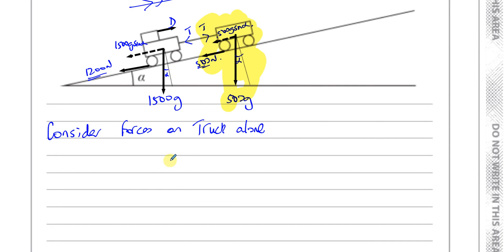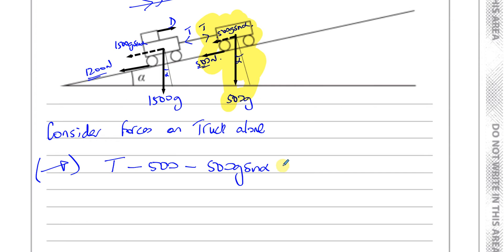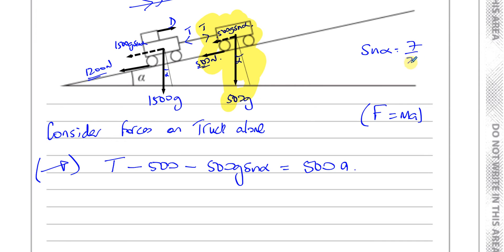Taking forces on the truck, the thrust T acts up the plane. The other forces act down: the resistance to motion of 500 N, and the component of the weight down the slope which is 500 G sine alpha. Applying F equals MA, that equals 500 times A. We know T is 2,000 N and sine alpha is 7 over 25.